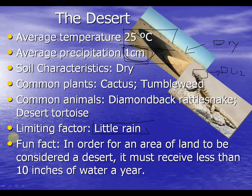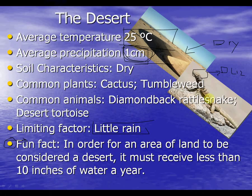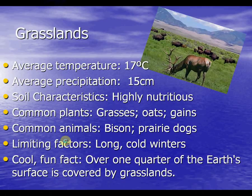A cool fact: in order for an area of land to be considered a desert, it has to receive less than 10 inches of water a year. One centimeter of precipitation is definitely a lot less than 10 inches.